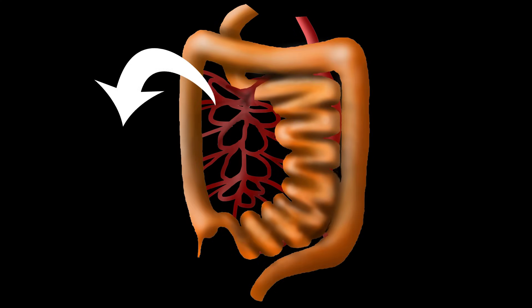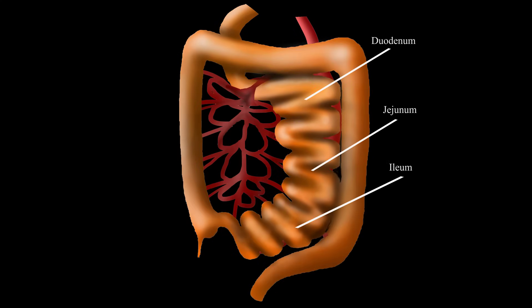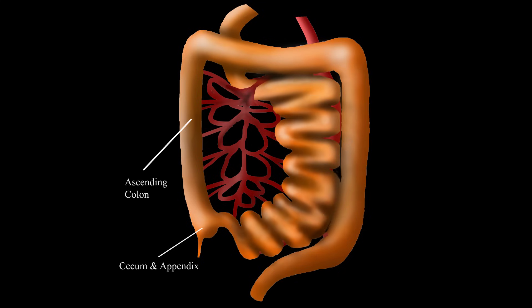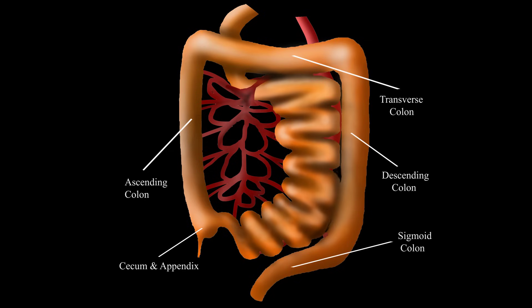The duodenum, jejunum, and ileum are now inside the borders of the entire colon, which is composed of an ascending part, a transverse part, a descending part, and a sigmoid part.